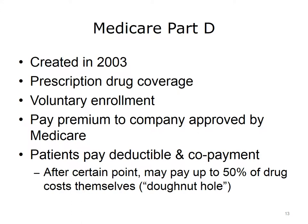Medicare Part D was created in 2003 and provides prescription drug coverage. Enrollment is voluntary, and enrollees pay a premium to an insurance company or other private company approved by Medicare. Enrollees also pay a deductible and copayment. After a certain point, enrollees may have to pay up to 50% of their prescription drug costs themselves for a portion of the year. This controversial coverage gap in Medicare Part D, known as the Donut Hole, has been addressed in the Patient Protection and Affordable Care Act, passed in 2010.